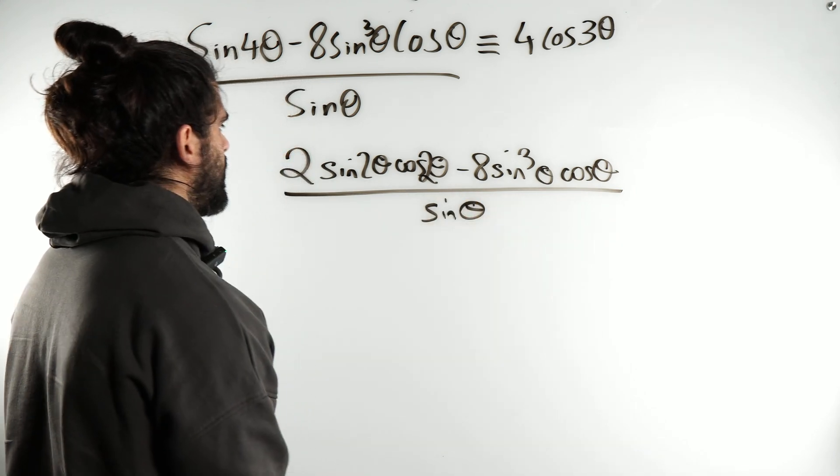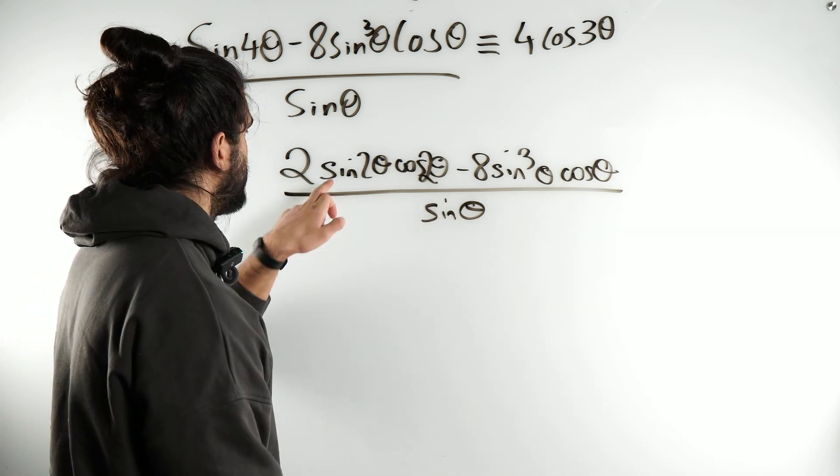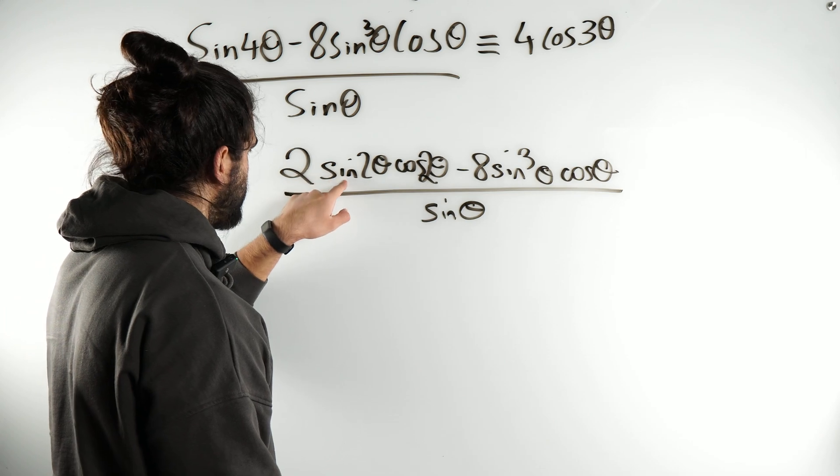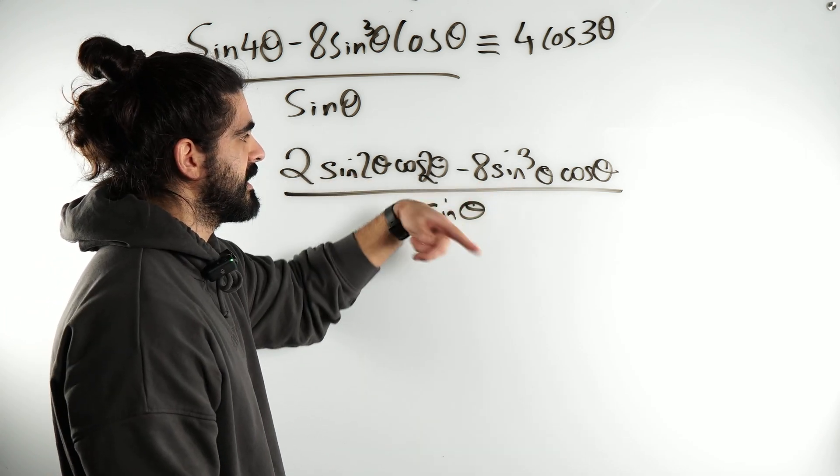Okay, now the issue with this is that nothing cancels. I want to get rid of this as well. I'm going to use the double angle ID on this so that I can cancel with this because this will cancel with that to make sine squared.